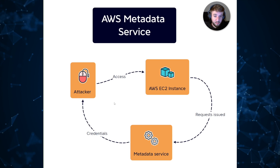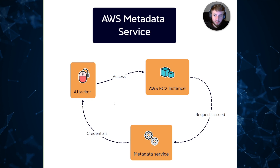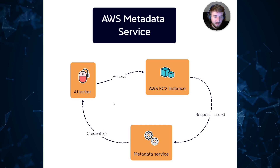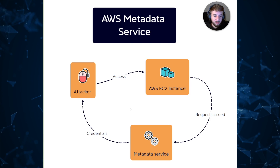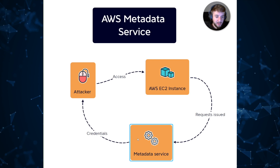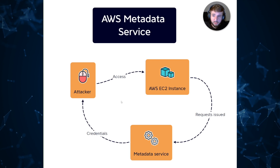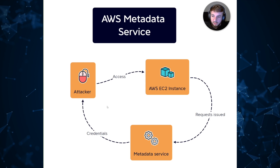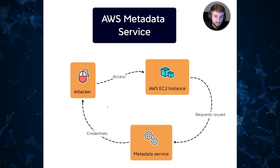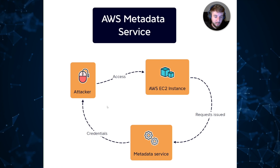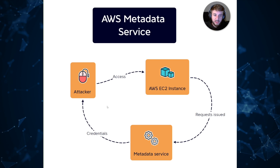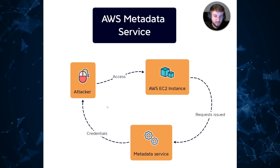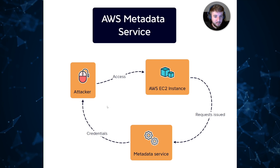From that point, the exploitation path is extremely custom — it depends on what is hosted within the AWS environment, what privileges are assigned to the credentials generated by the metadata service, and what the attacker is trying to achieve. Are they trying to cause an outage, exfiltrate data from S3, or install a crypto miner across instances using a Lambda function? That's where the attack path can balloon into a heavily custom series of exploitation mechanisms.